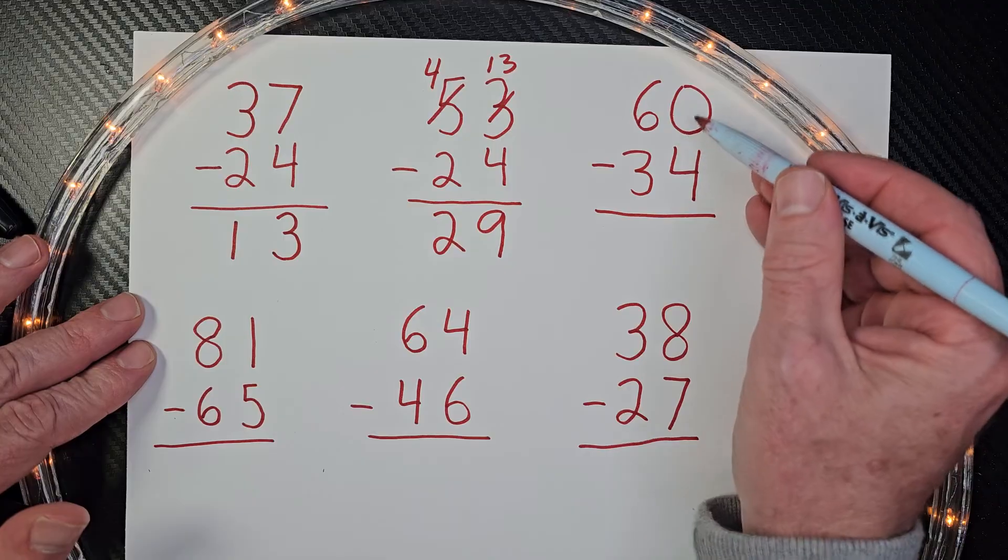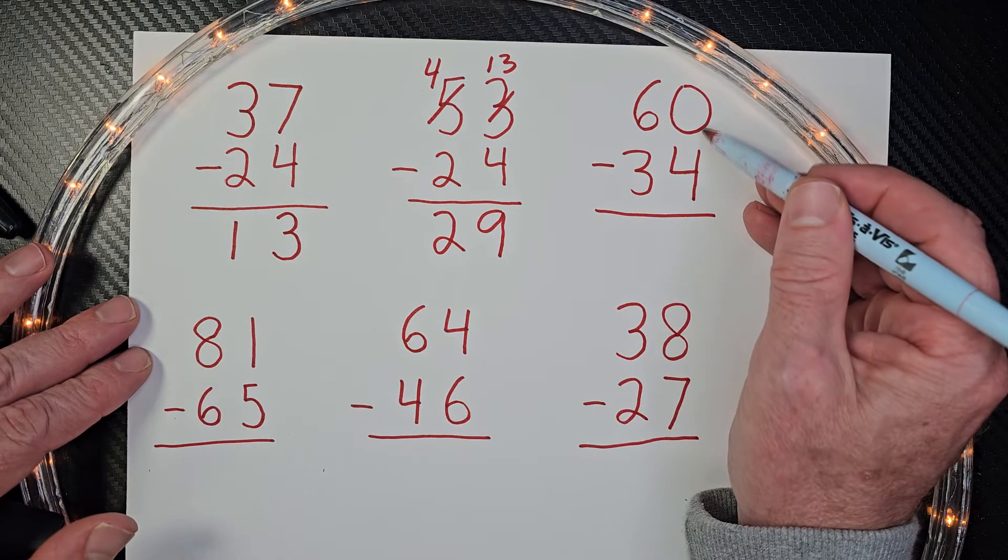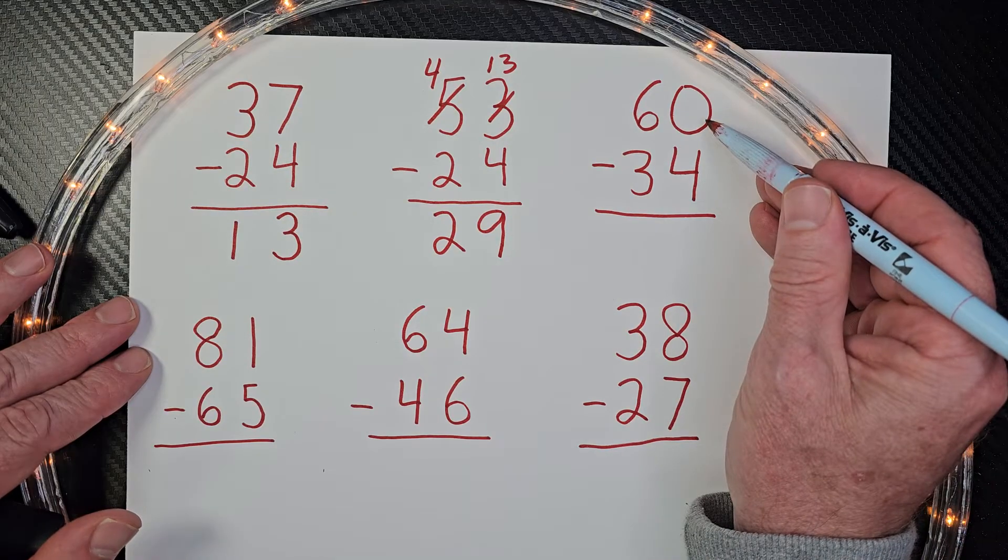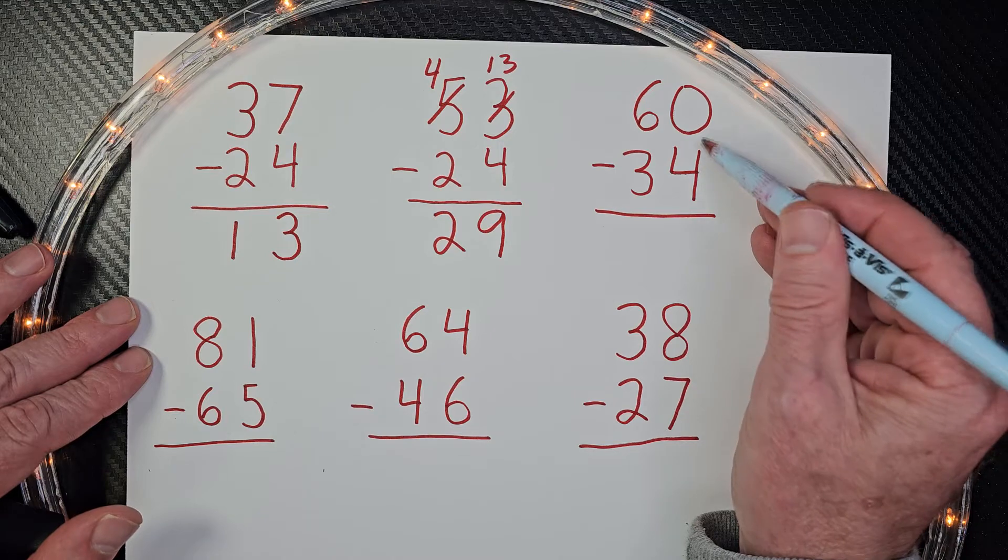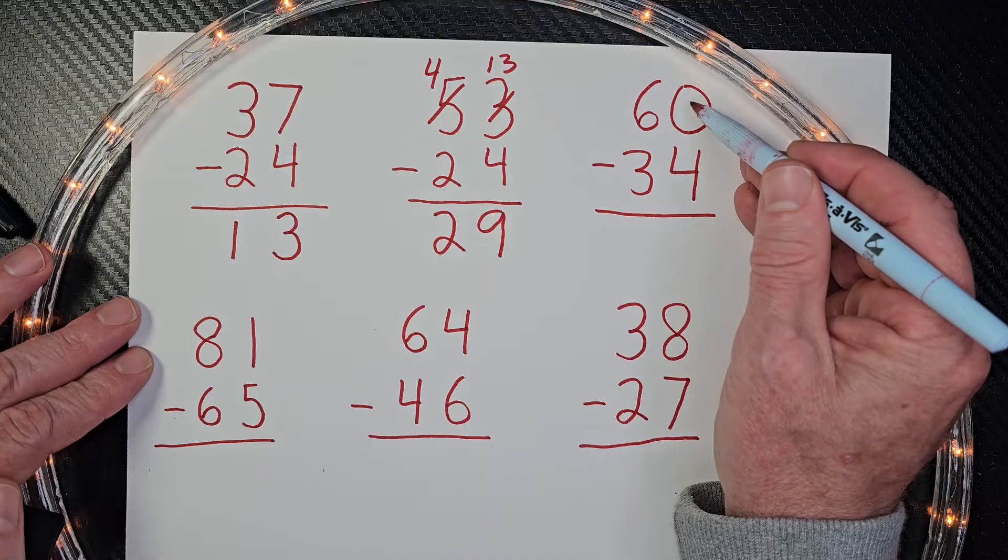Let's go ahead and take a look at this problem here. We have a zero. Now sometimes students will see that and they're like, oh, I'm just going to put down a four. But no, you have zero, like zero cookies and I want four cookies. You just can't do it. It would be a negative number.